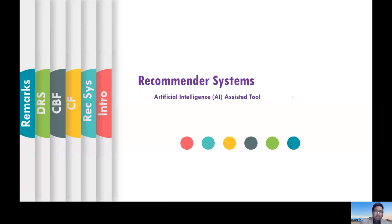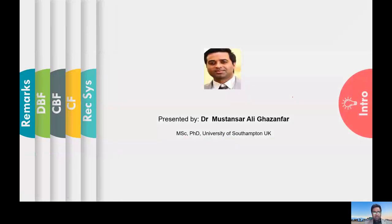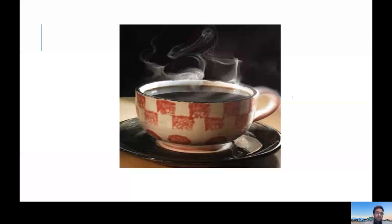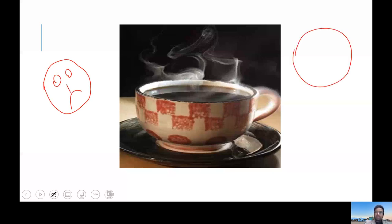Recommender systems are basically an artificial intelligent assistant tool. Let's open our discussion with a cup of coffee because this is the morning time. I can see a lot of you like this, and we want to make you like a big smiley. I hope coffee will give you a flavor to boost that smiley.